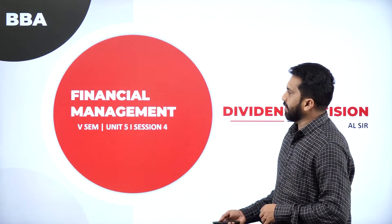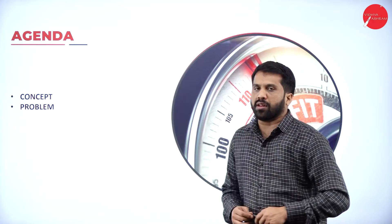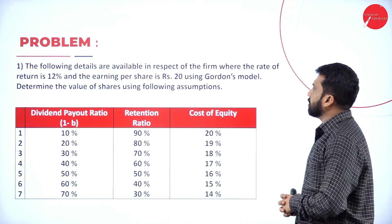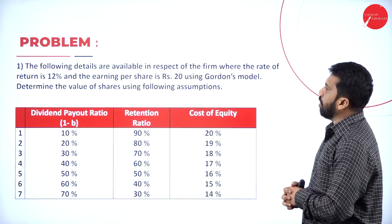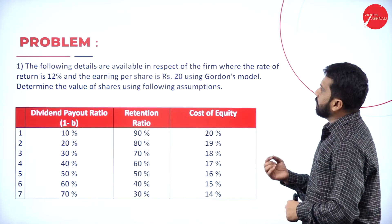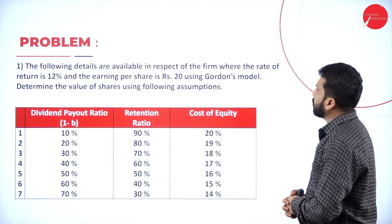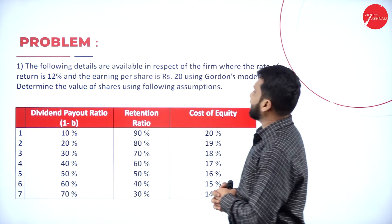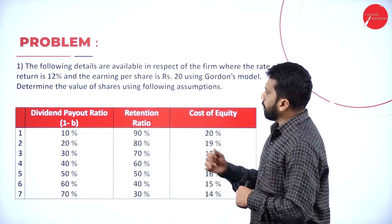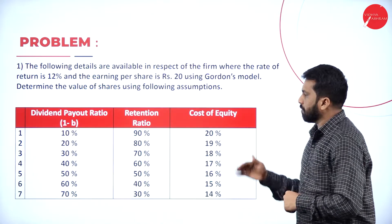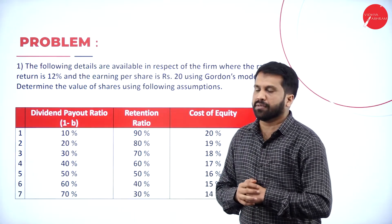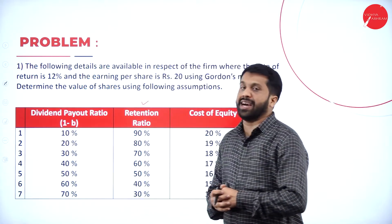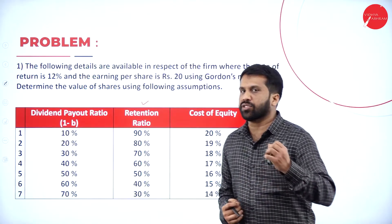I'll go to the next slide. Both concept and problem will be discussed in today's session. The following details are available in respect of the firm with a rate of return of 12%. We have dividend payout ratio, retention ratio, and cost of equity as the given information.